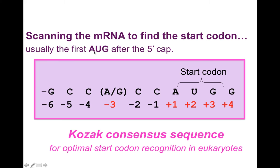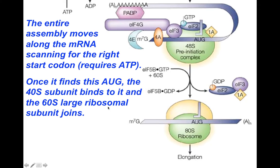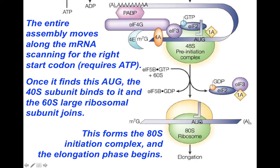The next thing that happens is scanning — the messenger RNA is scanned to find the start codon, and it's usually the first AUG after the 5' cap. Marilyn Kozak looked through many sequences of messenger RNAs in eukaryotes and came up with a consensus sequence for an optimal start codon. This is important if you're building a eukaryotic expression system — having the best consensus sequence in front of your start codon allows ribosomes to bind efficiently and produce more protein. After scanning and finding the correct start codon, the initiation factors are released, the tRNA remains bound to the AUG, and the large ribosomal subunit joins to form the initiation complex, then elongation begins.